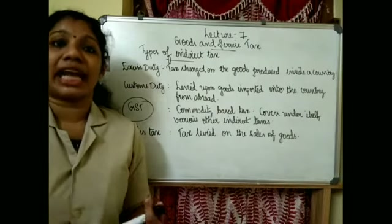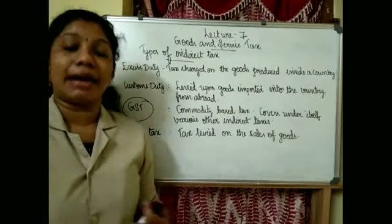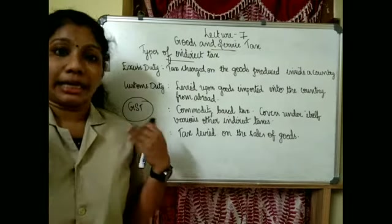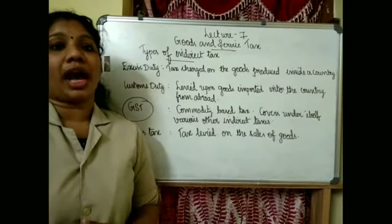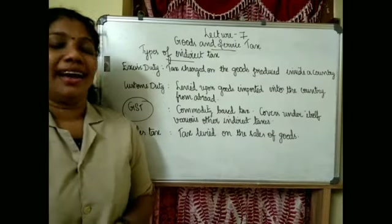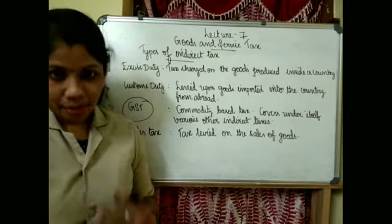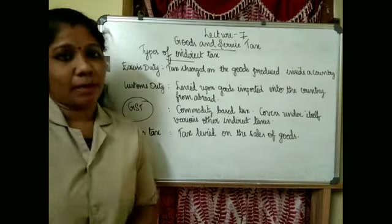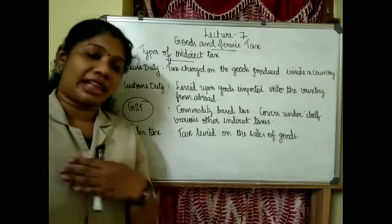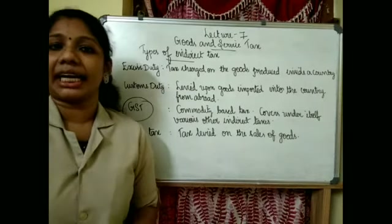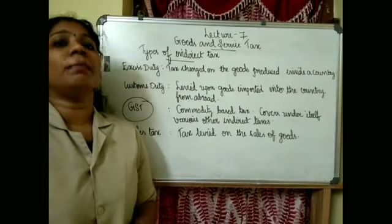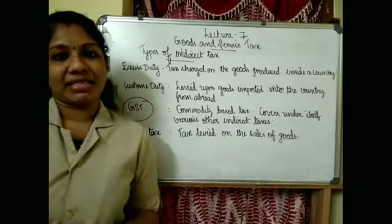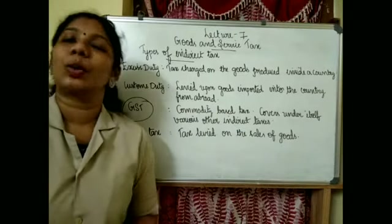Then there is octroi tax, anti-dumping duty, and dumping duty. There are various other indirect taxes related to trade and commerce, and we will study various forms of indirect taxes in the coming classes.